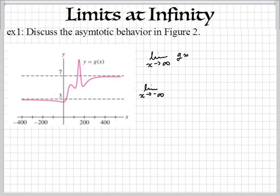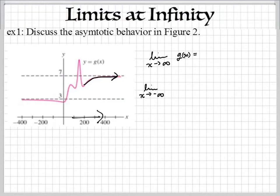We're going to look at g(x) right here. g(x) is given to us in a graph, and I love the graph ones because visually I think it's so much more simple to understand graphically. As x's are going that way, increasing and increasing, our graph is getting closer and closer to a y-value of 7. So as x approaches infinity for the g(x) function, we are going to get 7.